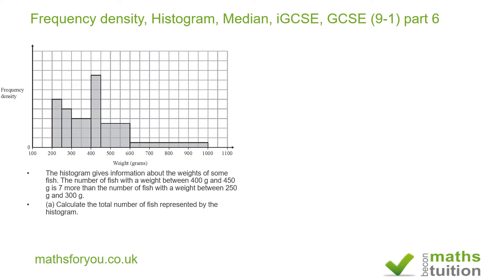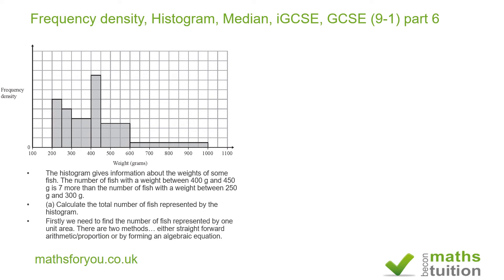You can do this one algebraically. For this column here, say the number of fish is x. For this column here, the number of fish is x plus seven, according to the question — so that's x plus seven there.